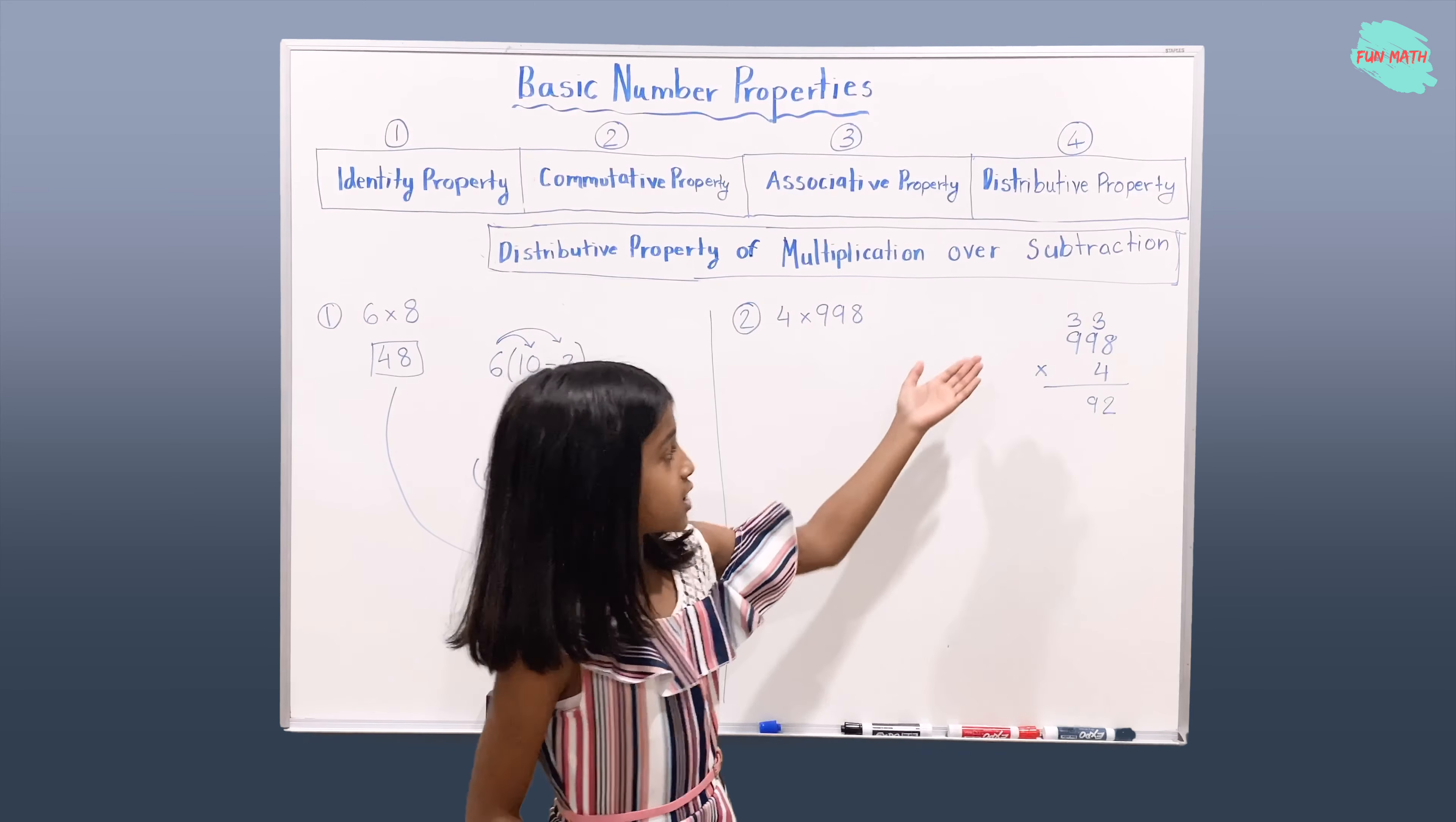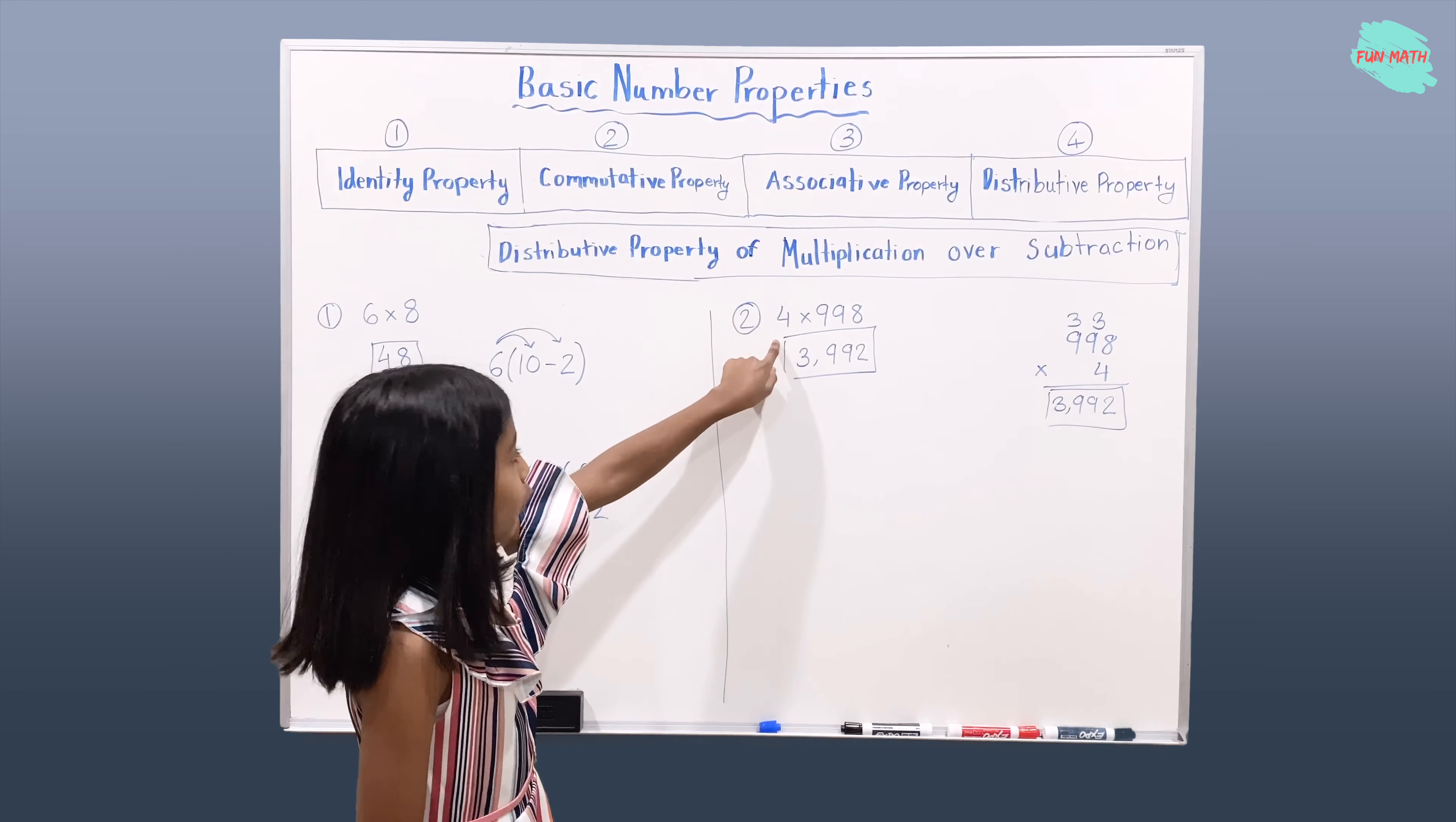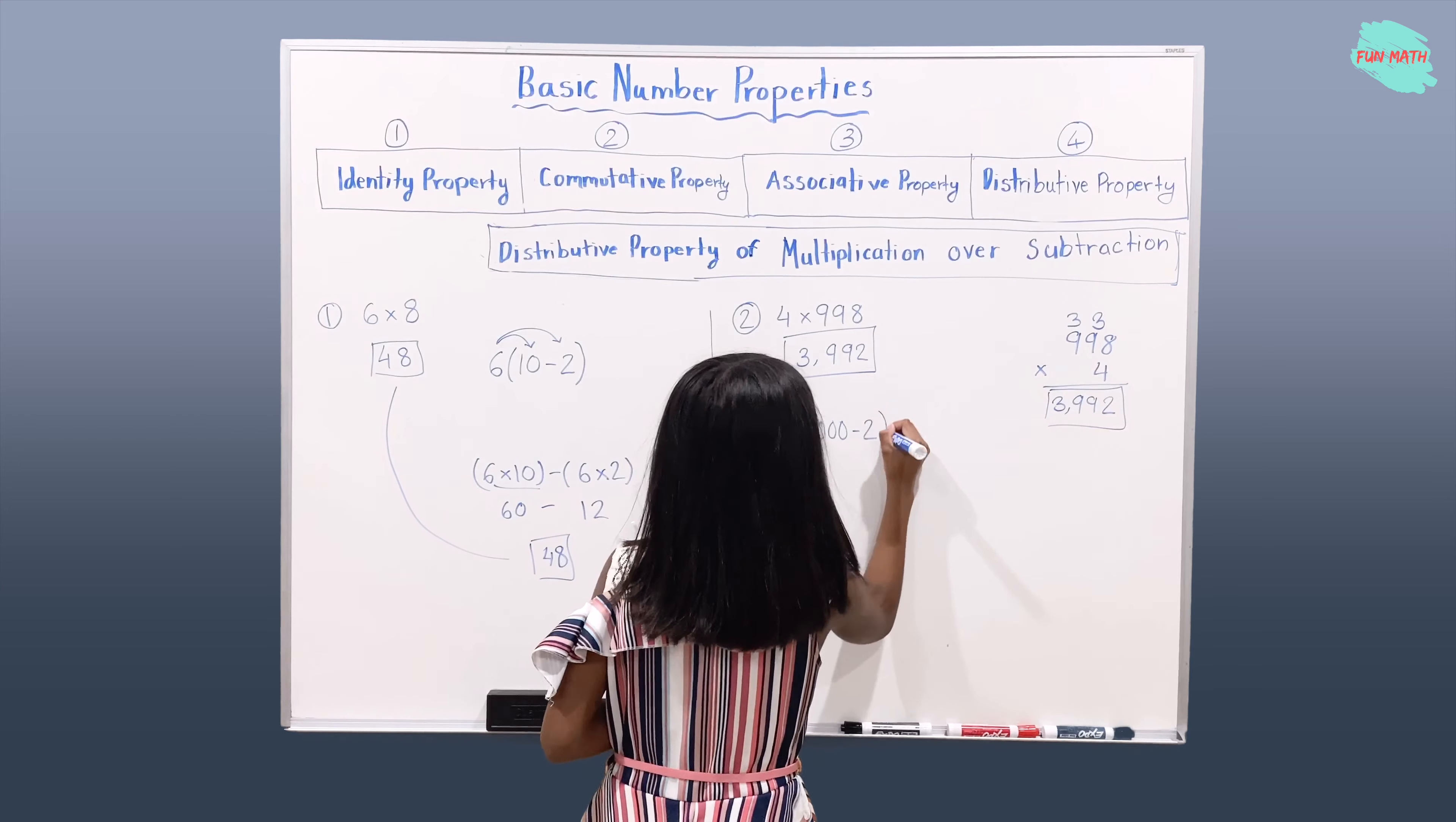So the answer should be 3,992. Okay, so now let's write 4 times 998 in the distributive property. We're going to write 4 in parentheses and we're going to do 1000 minus 2.